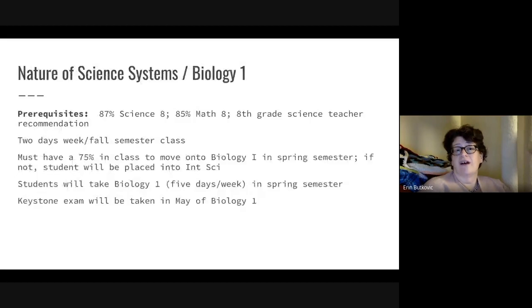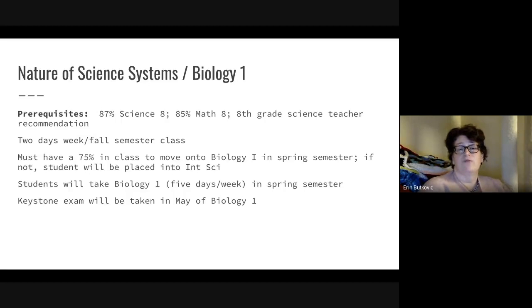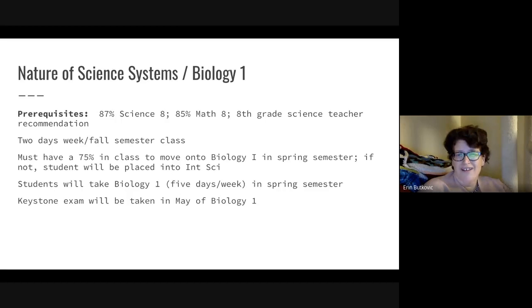For the Nature of Science Systems and Biology 1 option, prerequisites are 87% in science eight, 85% in math eight, and an eighth grade science teacher recommendation. This is a full year sequence. Nature of Science Systems is a two-day-a-week class in the fall semester, and you must have a 75% in the class to move on to Biology 1 in the spring. If a student does not achieve 75%, they will be placed into Integrated Science. Students then take Biology 1 five days a week in the spring semester.